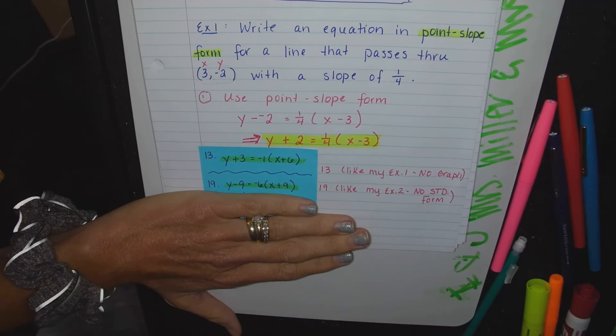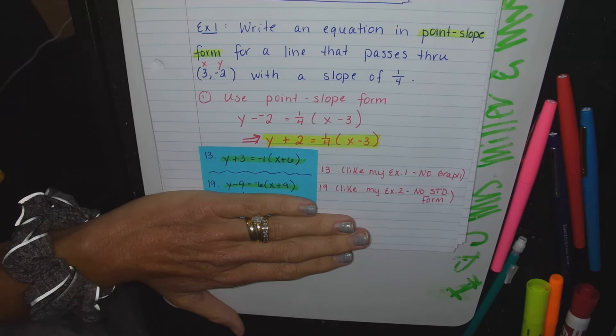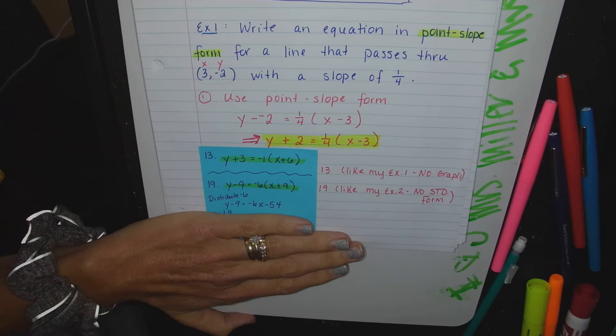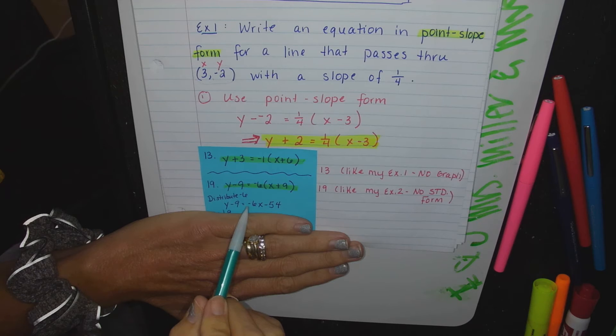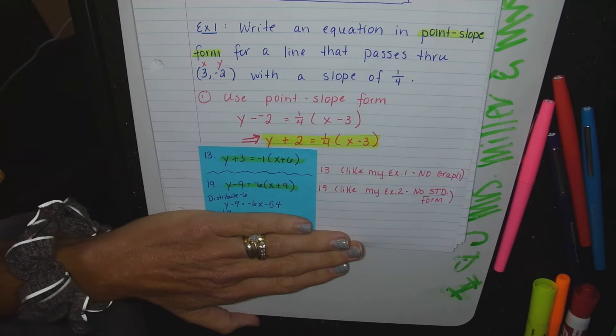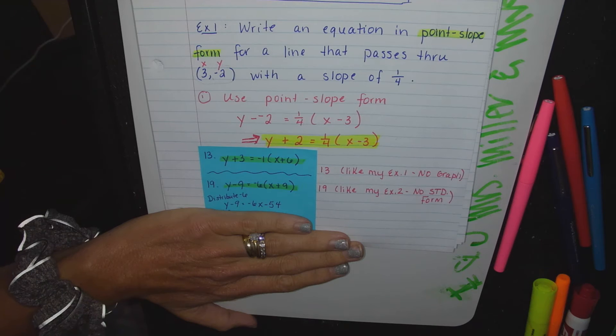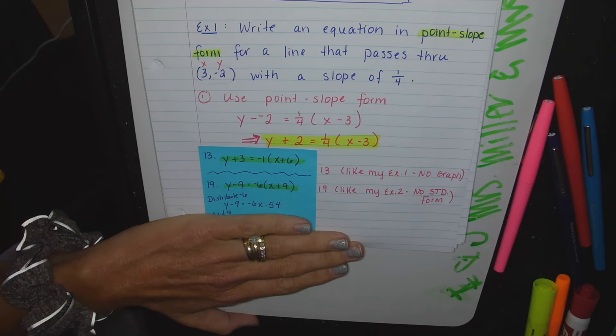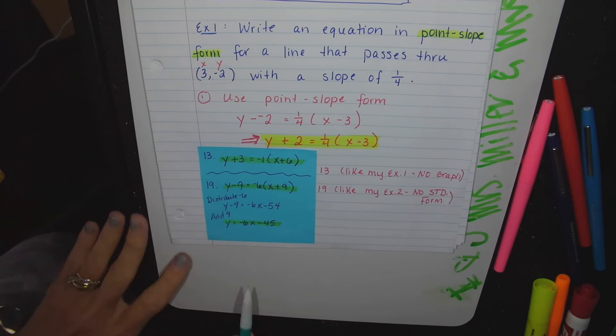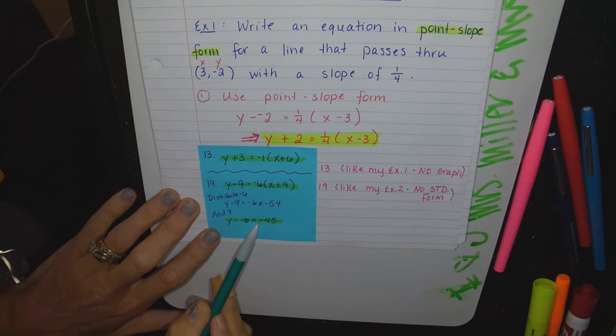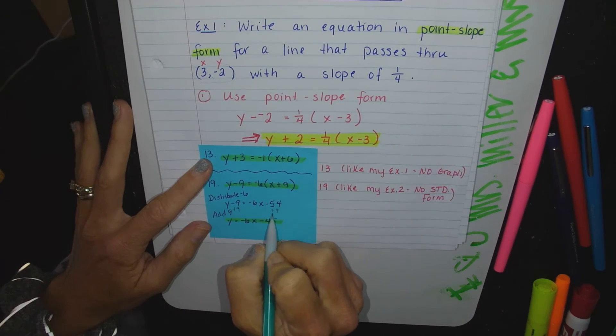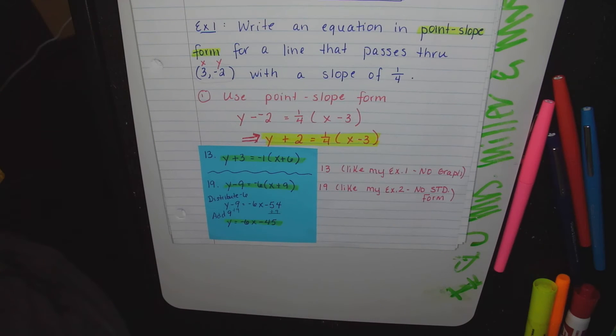19 had two parts. The first part is point-slope. Maddie? So here's the point-slope, and to write it into slope-intercept, you start here. What number do I distribute? Negative six. You're right. And you end up here. Negative six times x, negative six times nine. There you go. There's one number in the way. I've got to move it over. Negative nine, you see it? So I'm going to add nine to both sides. And you end up with negative 6x minus 45. Just a refresher: negative 54 plus 9. You're still negative, but it's negative 45.